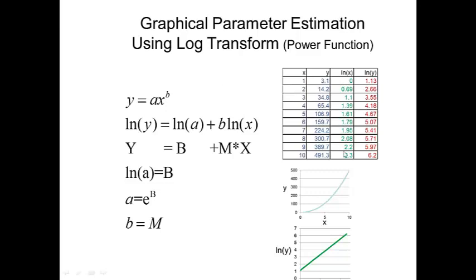This column is the natural log of y. These red numbers are the natural log of the numbers in this column. When we plot these data, we get this curve. It looks kind of like a parabola. But we take the log transform, we get this new set of numbers, and that plots up like this, like a line.